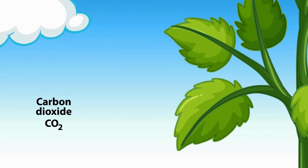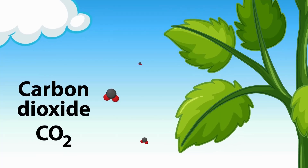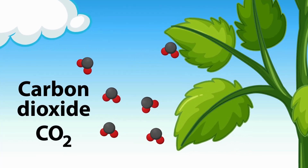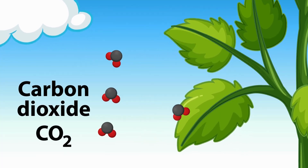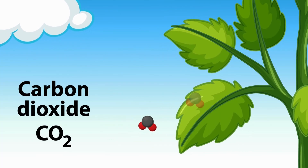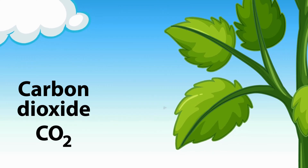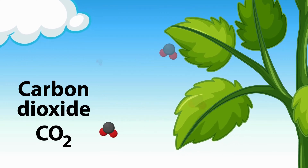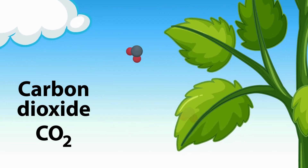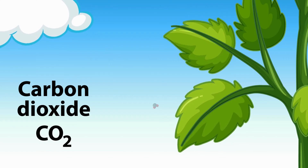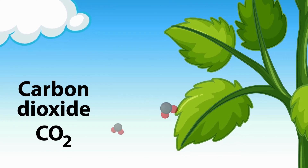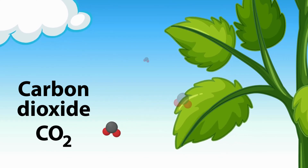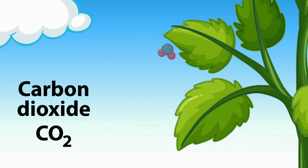Carbon dioxide, taken from the air through small openings in the leaves called stomata, is another crucial component of photosynthesis. During the process, carbon dioxide is combined with electrons and protons from water to form glucose.